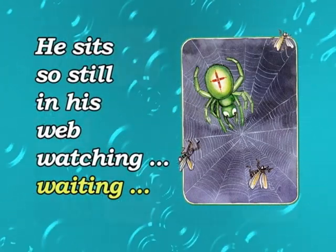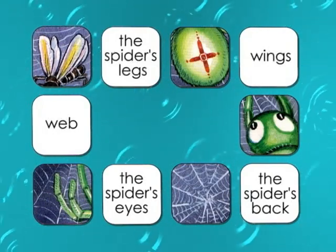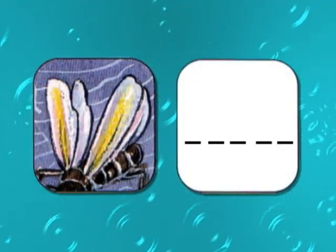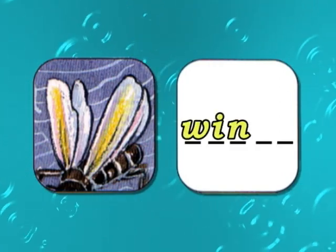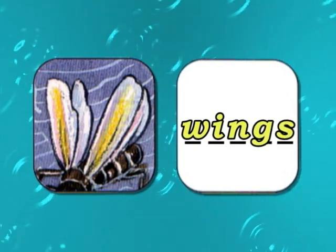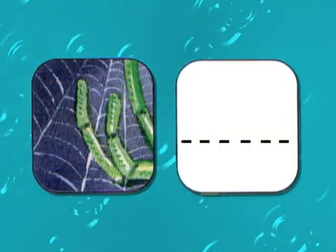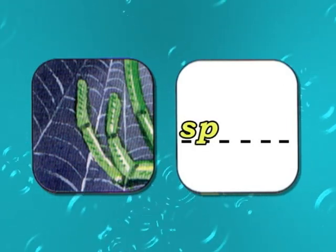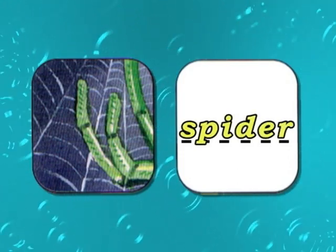Let's look at these words. Can you find the word wings? That's right. Can you spell the word wings? W-I-N-G-S. Good. What about the word spider? Can you spell the word spider? S-P-I-D-E-R. Spider.